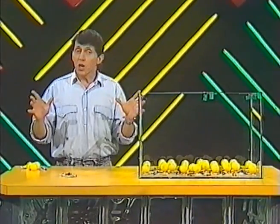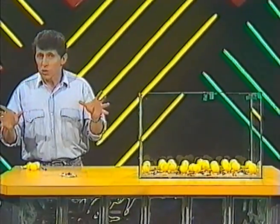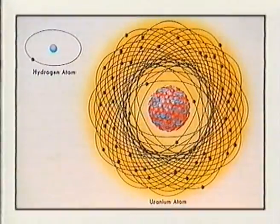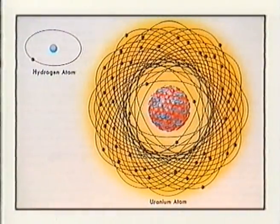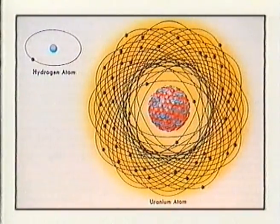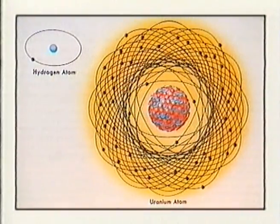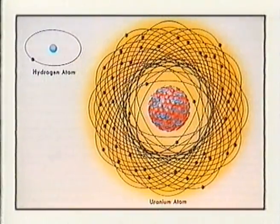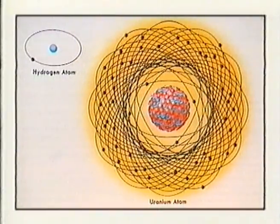Atoms vary enormously in size, from the tiniest ones called hydrogen atoms — one proton in the middle, one electron around the outside — through to things like uranium, which have dozens of protons and neutrons in the middle and dozens of electrons around the outside.